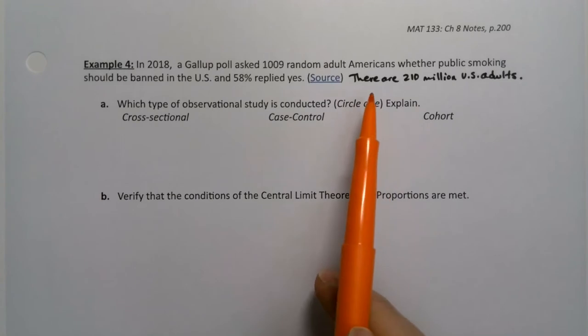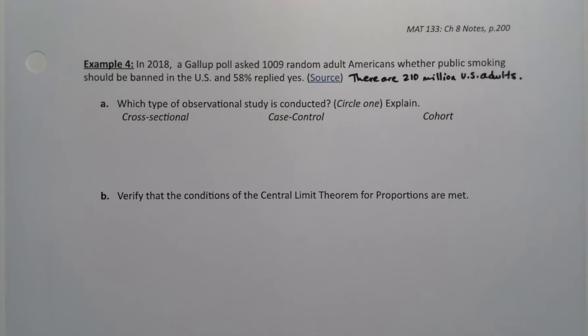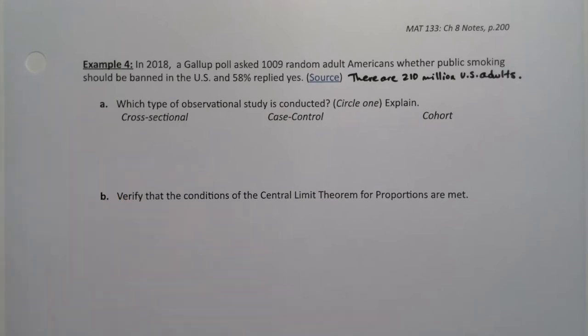And just on a side note, a simple Google search will let you know there's about 210 million U.S. adults, give or take. All right, so first of all, there's that review question, right?